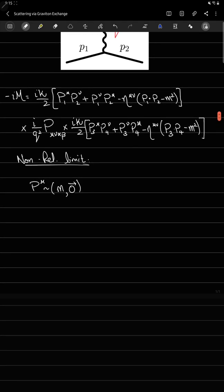What do I mean by non-relativistic limit is that p mu is equal to m and zero vector. Using this, I can transform this above amplitude as minus kappa squared over 4 m1 squared times m2 squared over q squared, which equals, using the value of kappa, minus 16 pi G m1 squared m2 squared over q squared.